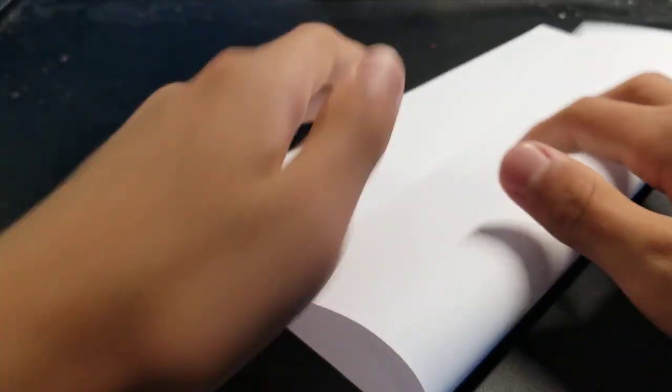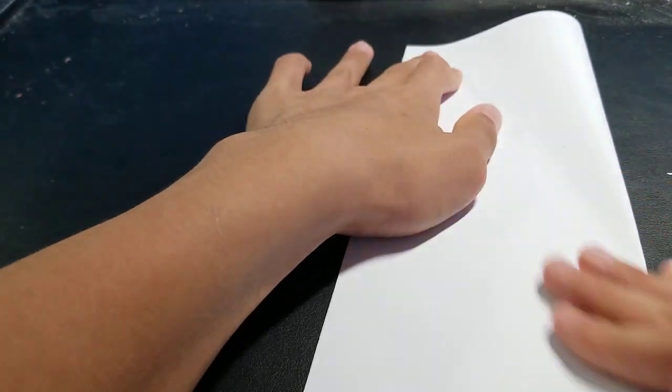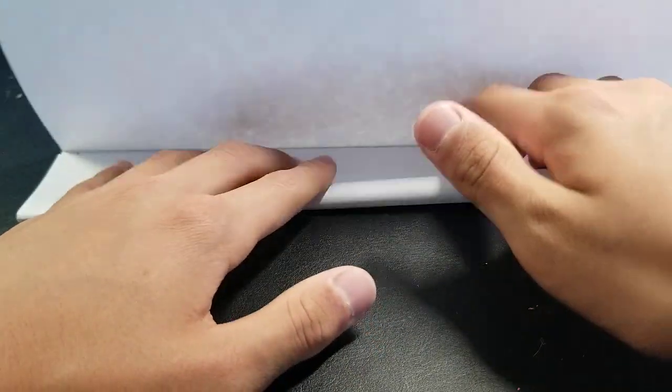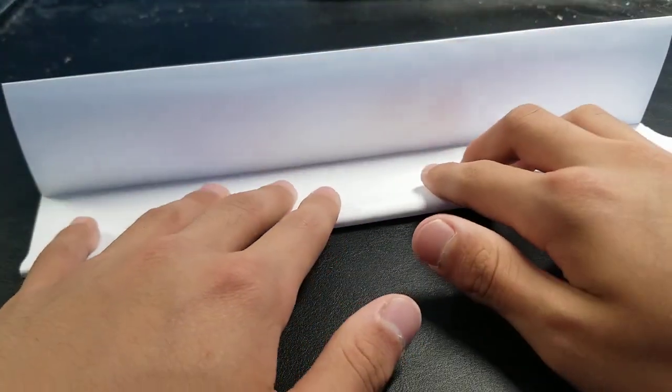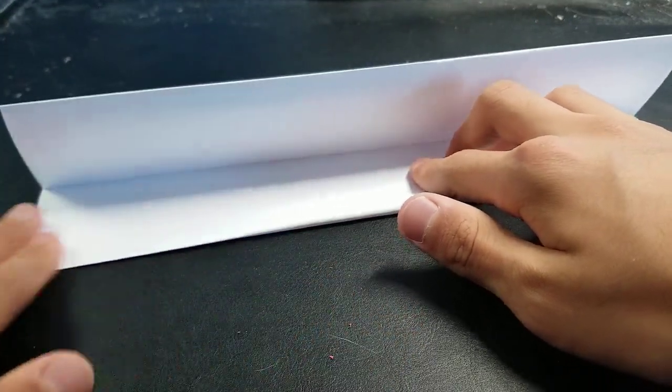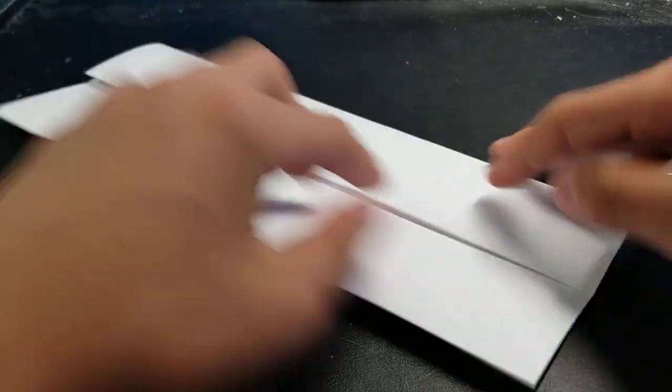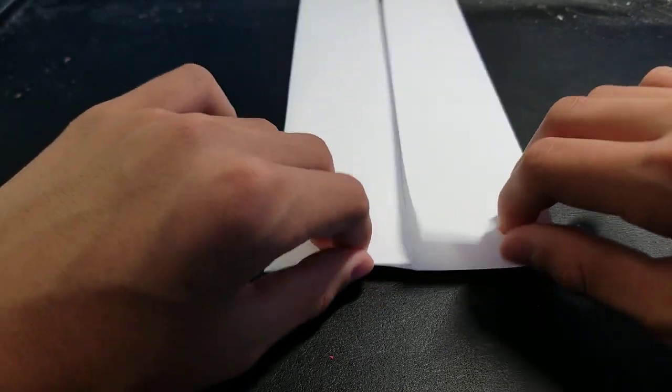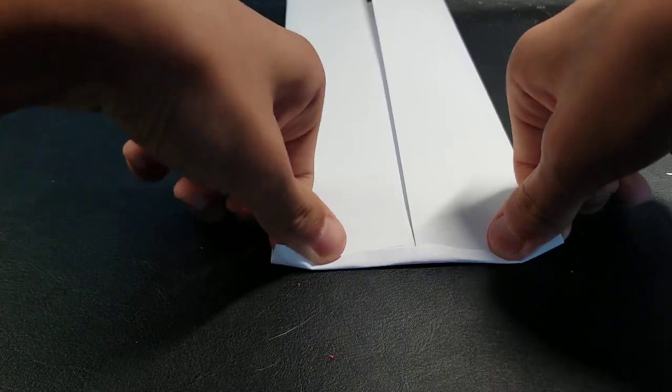Fold it in half with the long sides touching. Unfold it and just bring the bottom edge up. Same with the other side like that. Now take the small side and just fold it up like that.